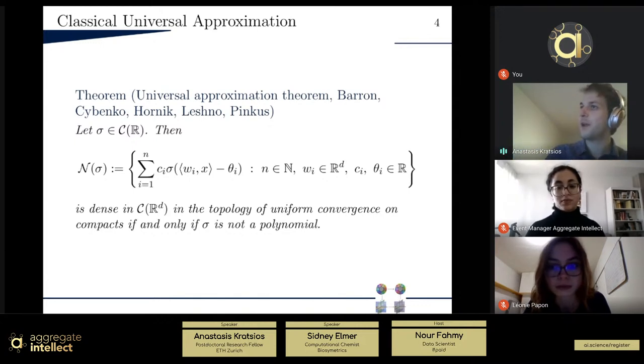Or, rapidly said, it's dense in the space of continuous functions in Rd for the uniform or compacts topology, if and only if this important function here, this continuous function, is not a polynomial. So these are the sort of called shallow neural networks. And this is the original universal approximation theorem. Well, actually, it's improvement by these last two authors.